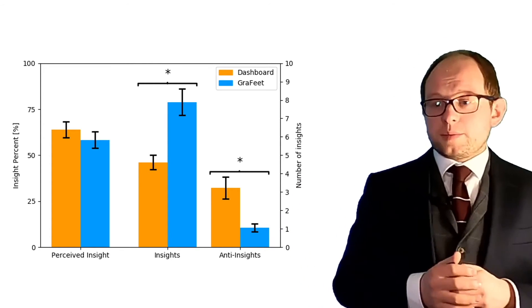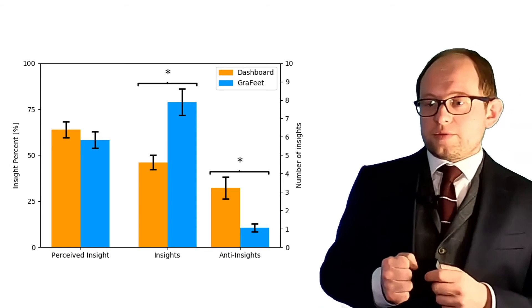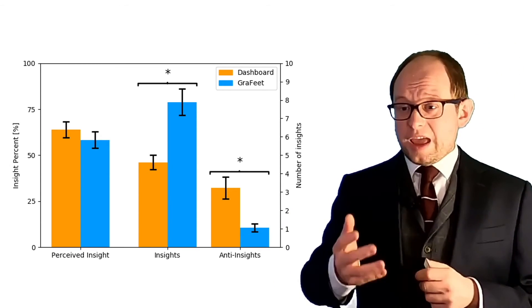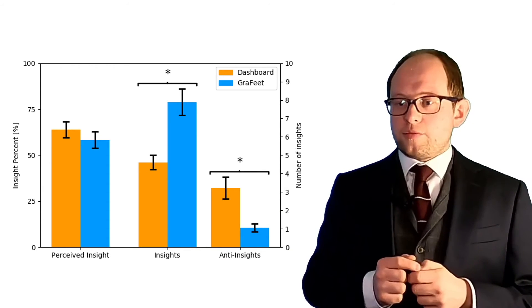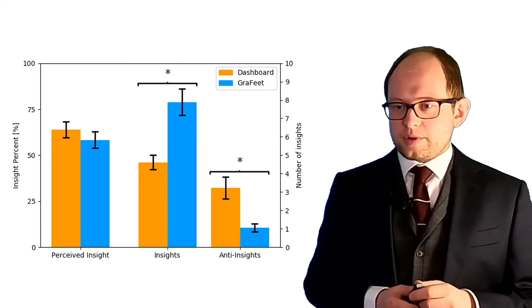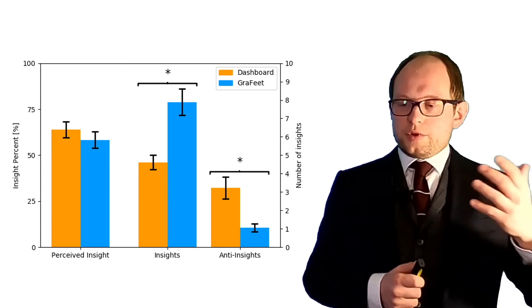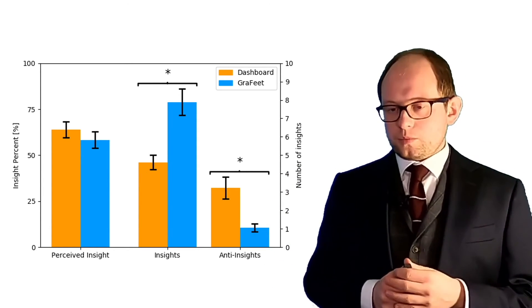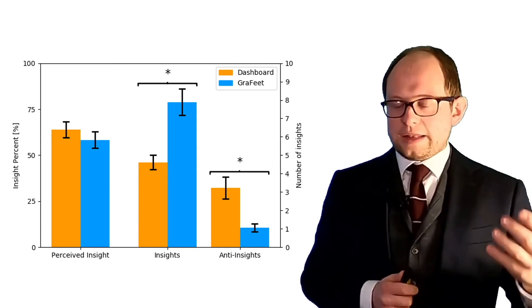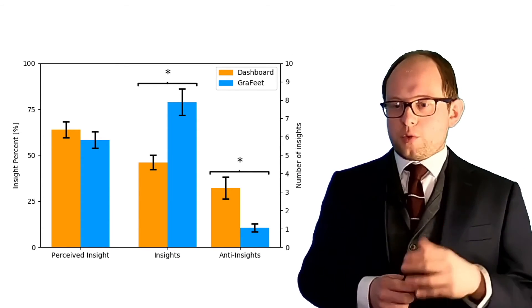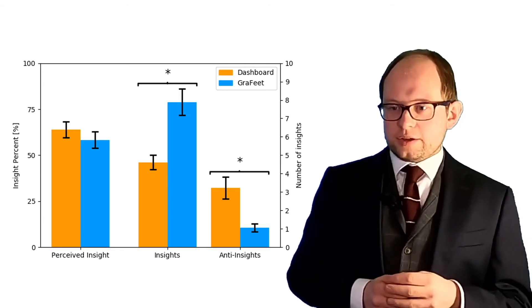And we found that our system, a tangible shoe that visualizes gait metrics, led to both more insights, so people were able to observe more things and make more correct conclusions about the gait metrics, and also less anti-insights, so the interpretation led to less incorrect assumptions about one's running characteristics.